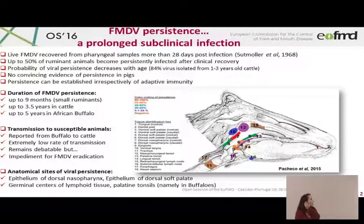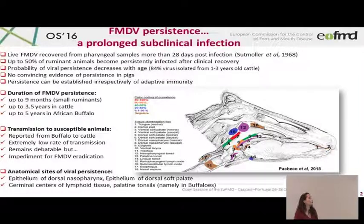Regarding the sites of persistence, different anatomical sites of viral persistence have been described: the epithelium of the dorsal nasopharynx, the epithelium of the dorsal palate, and also germinal centers of lymphoid tissues and palatine tonsils, namely in buffaloes.